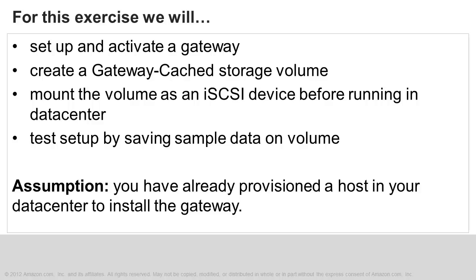We will start by setting up and activating a gateway. We'll then create a gateway cache storage volume and mount this volume as an iSCSI device from a client running in your data center. Finally, we'll test our setup by writing sample data to this volume and taking a snapshot of this data in Amazon S3.